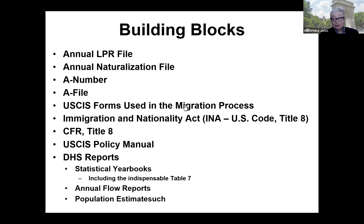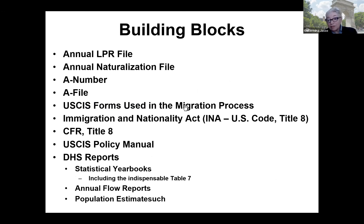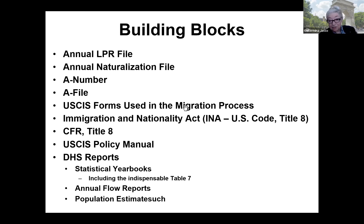DHS produces every year an LPR file — everyone who got LPR that year — and an annual naturalization file, everyone who naturalized. A key element is the A number, or alien number, which is assigned to each foreign born person. This will be the linchpin that permits linking from the LPR file to the naturalization file and to all other databases that arise from forms people must fill out every time they approach the immigration service.